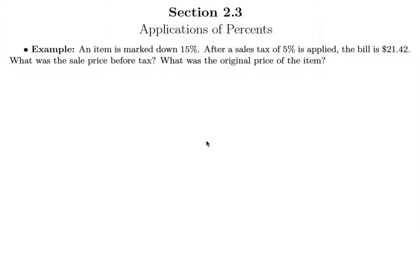In this lesson we're going to look at a problem where we have both a discount and a sales tax applied to a purchase. An item is marked down 15%. After a sales tax of 5% is applied, the bill is $21.42. What is the sale price of the item before tax? And then what was the original price of the item?